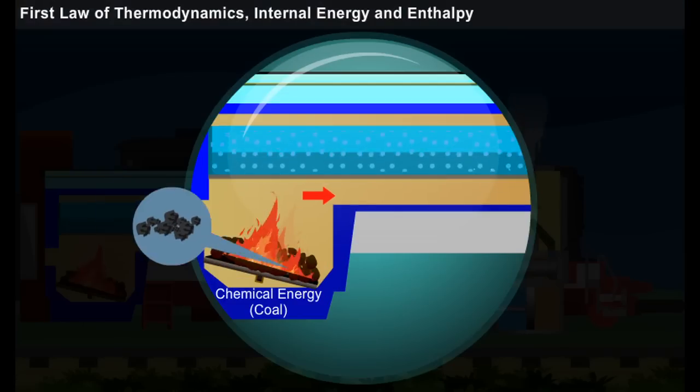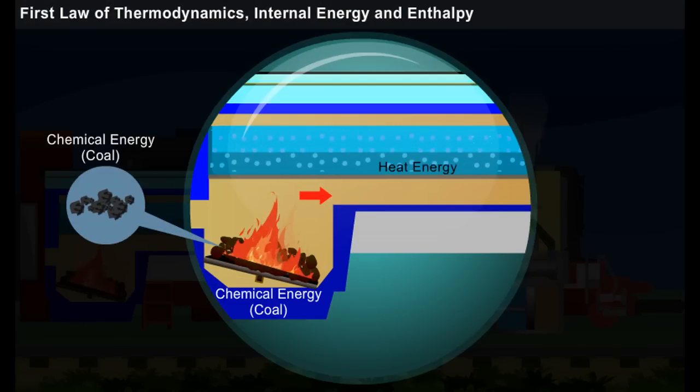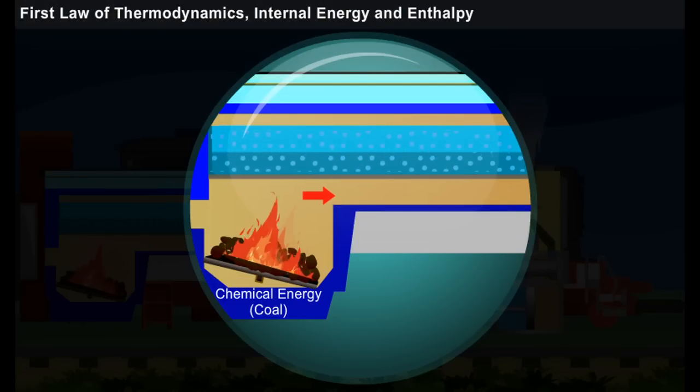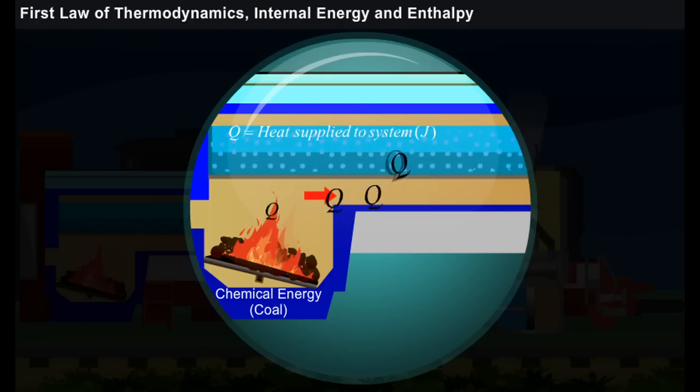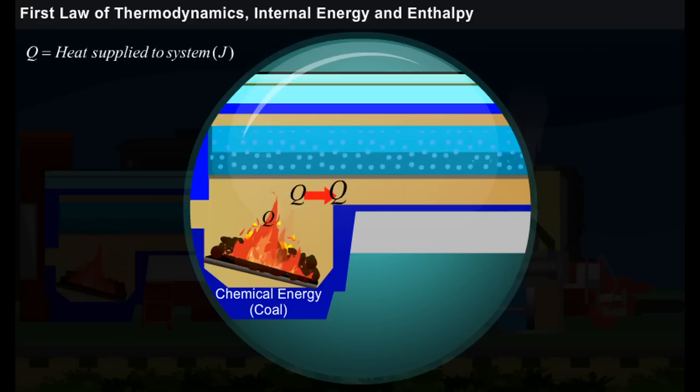Here, the chemical energy of the fuel is converted into heat energy when they burn. Let us denote the heat energy supplied by burning of this fuel as Q. Generally, the unit for heat is Joule.